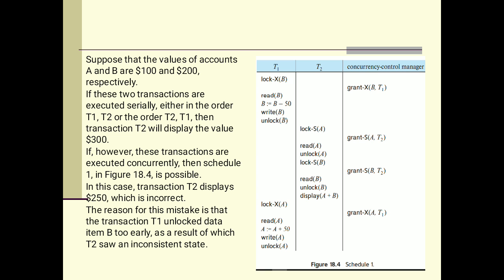However, if these transactions are executed concurrently, that means simultaneously, we cannot say that T1 transaction will complete and then T2 will start. In concurrent execution, while T1 will start and in between, before completion of T1, T2 may start its execution. The schedule 1 as shown in the diagram is possible. In this case, transaction T2 displays dollar 250, which is incorrect.